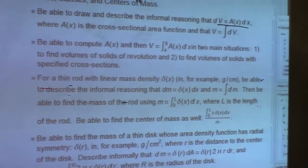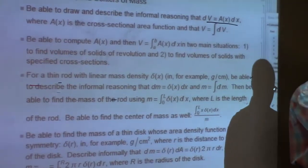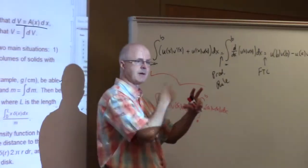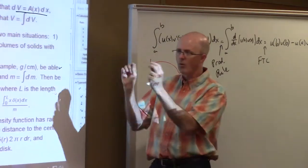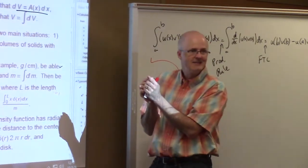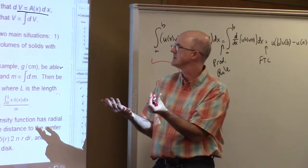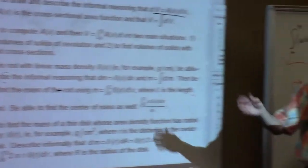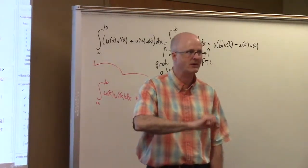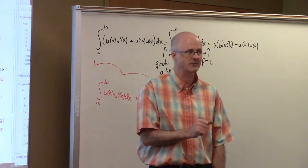This comes up in two main situations. Volumes of solids of revolution, so take a region in the xy plane and revolve it around some axis. Your cross-sections then are either disks, circles, or rings, washers, annuli, different words for those. Or volumes of solids with specified cross-sections like squares or equilateral triangles, or what we didn't have time for in class, even semicircles should be able to handle a semicircle case, too.